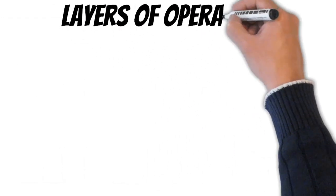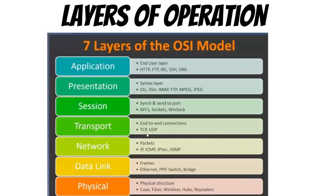That leads to my first key difference: the layers of operation — the OSI model. You will need to commit that model to memory as it will be used throughout your IT career. This model is how we're able to conceptualize the logical aspect of computer networking. It's made up of seven layers, all of which depend on either the layer above or below for proper communication. For this video we'll focus on layers 2 and 3, as they're the most relevant to the topic.